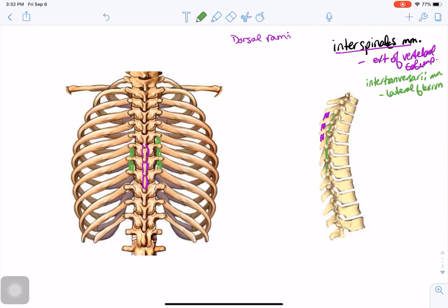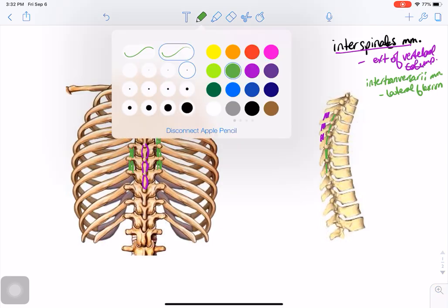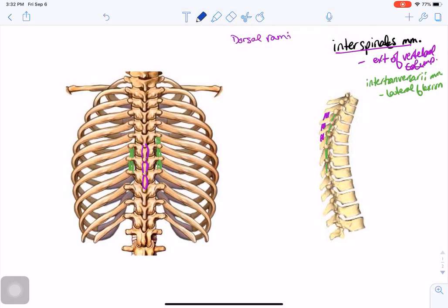The last of the muscles are the levatores costarum, and like the rotatores, there's a longus and a brevis.